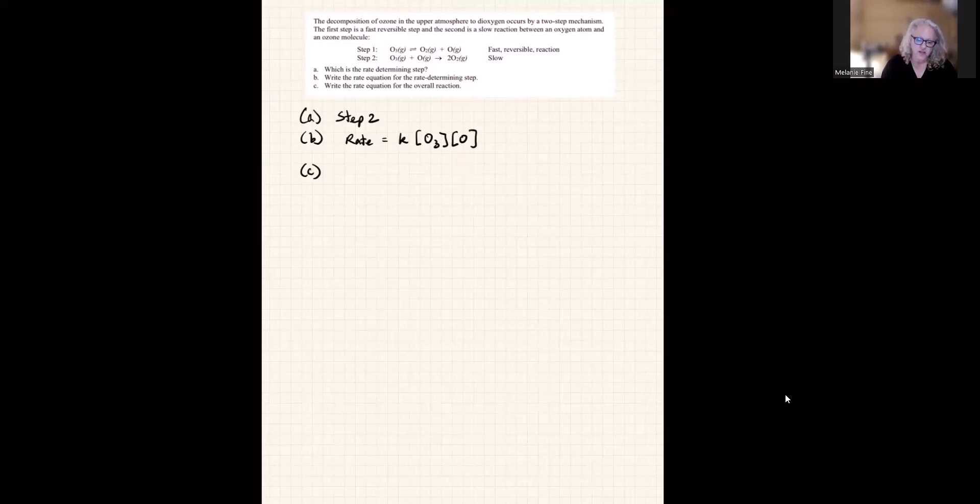So this is where it gets a little tricky. So let's look at step one. Step one is a reversible reaction. The rate of the forward reaction is K, let's say K1 times the concentration of ozone. And the rate for the reverse reaction, because remember at equilibrium, we know it's at equilibrium because it's got the double-sided arrow.